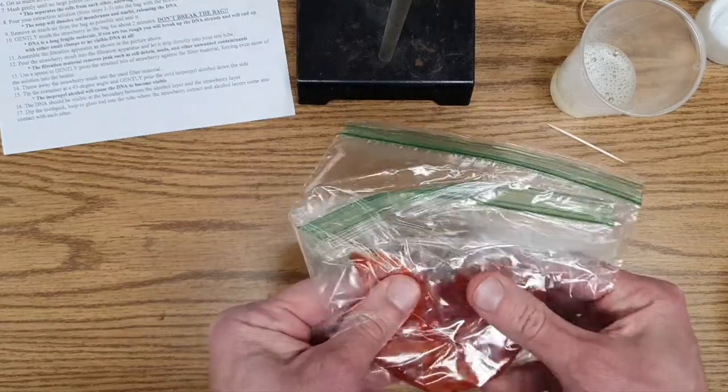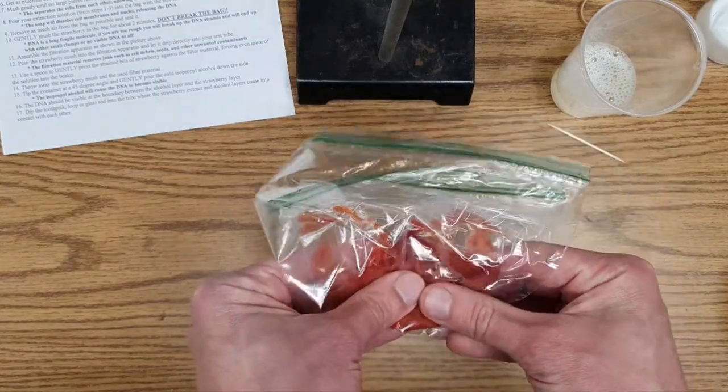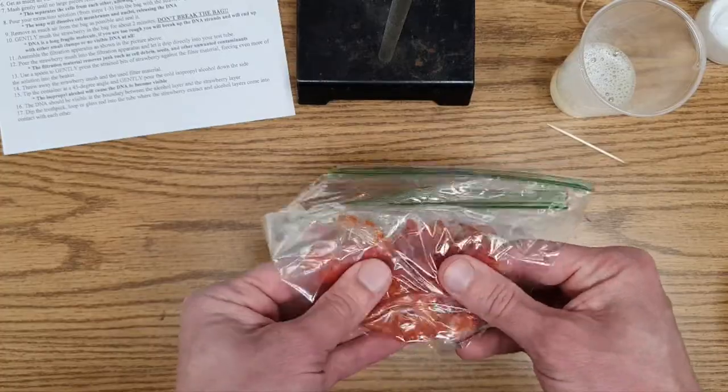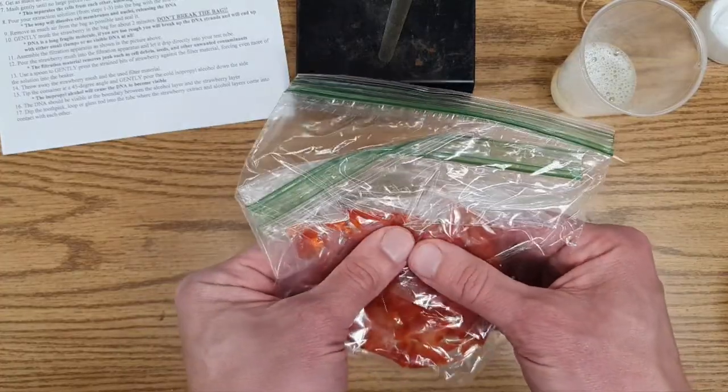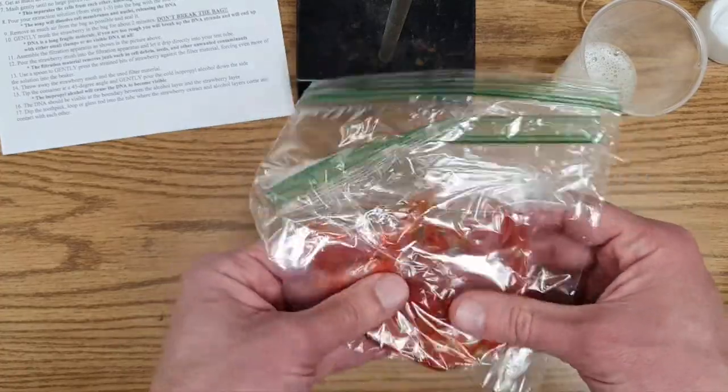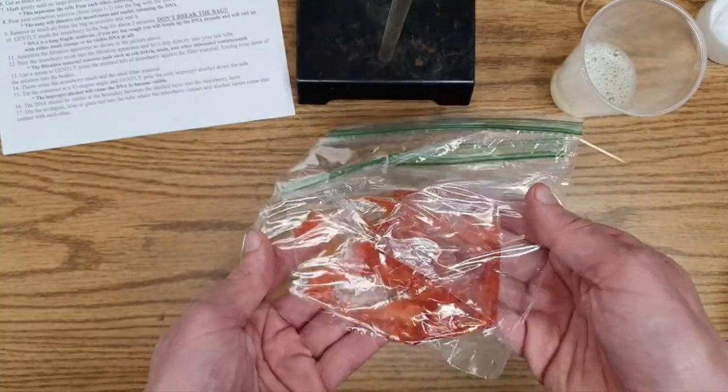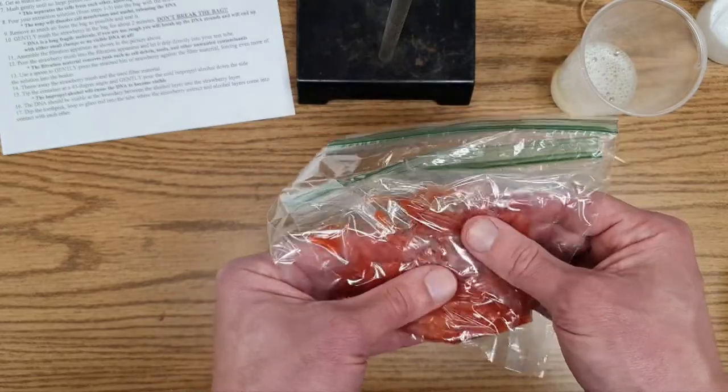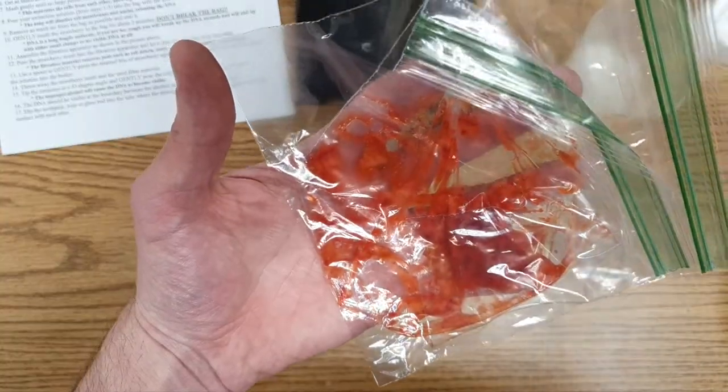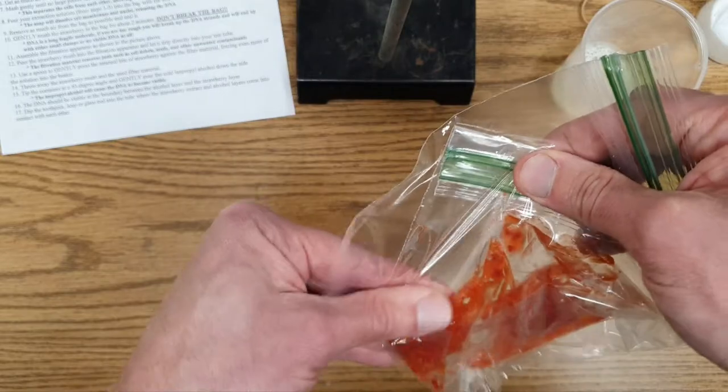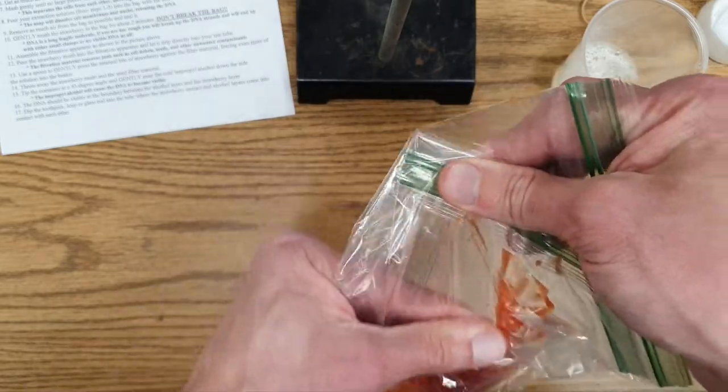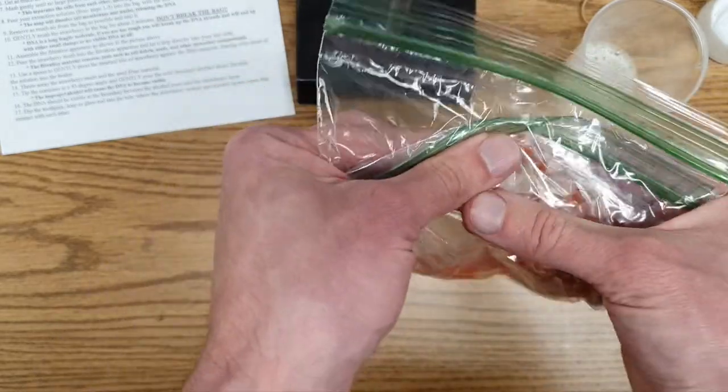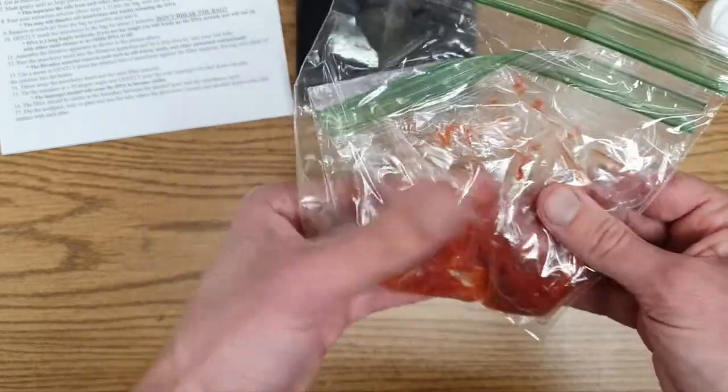Once you've done that, it's time to break up the strawberry. Just give it a good mushing for about a minute or so, and that will allow you to really make sure you get all the pieces broken up. Yes, you might wind up with the strawberry being pretty spread out like this, but that's okay. When you add the soap solution, it'll all come back together. So just mush, mush, mush for a good minute.